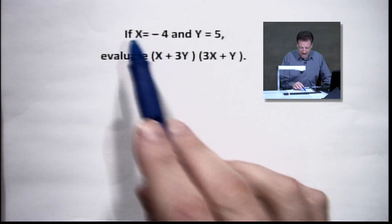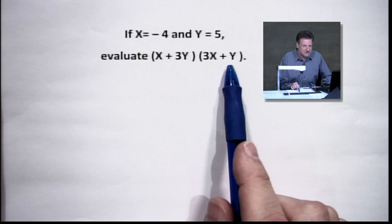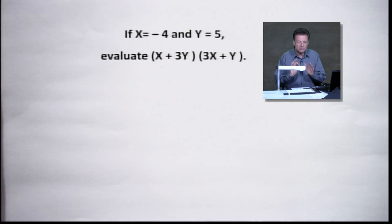So everywhere we have an x, we're going to put a negative 4 in there. Everywhere we see a y, we're going to put a positive 5. And that's the simple, straightforward meaning of it. Now, we threw some negative value here for a negative 4 in our x value today. Make you have to think just a little bit extra out there.